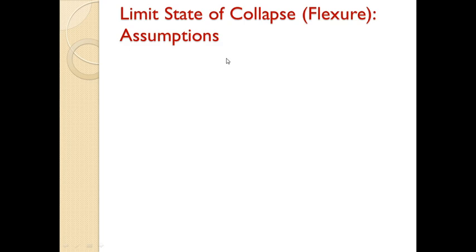Hello friends, welcome you all. In the last lecture, we discussed the partial safety factors, partial safety factors for material strength, partial safety factors for load, and the different types of loads which act on the structure — dead load, live load, wind load, snow load, and earthquake load. Now in this lecture, we are going to discuss the limit state of collapse flexure assumptions.